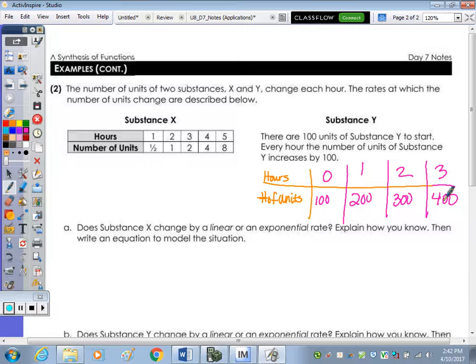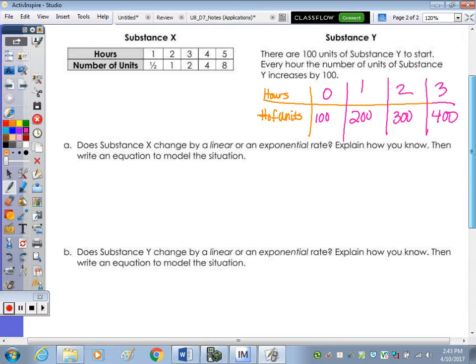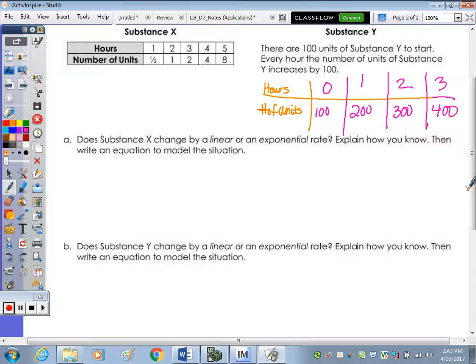Okay. So now we have two tables. Part A, does substance X change by a linear or an exponential rate? Explain how you know. And part B, does substance Y change by a linear or exponential rate? Explain how you know. So which one, substance X or Y, is linear? Y. Y is correct. So substance Y is linear. How did you know? Because it changes by the same rate every time. It has the same rate of change.